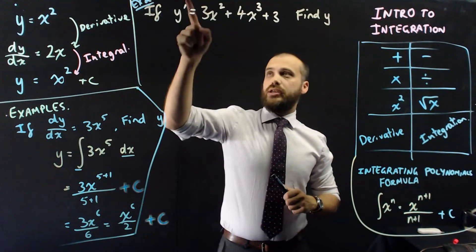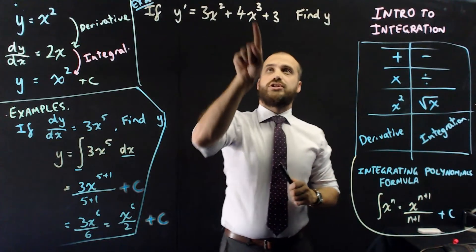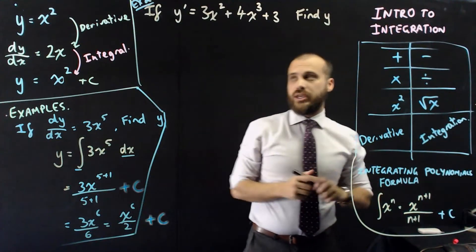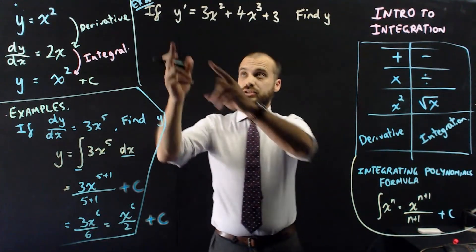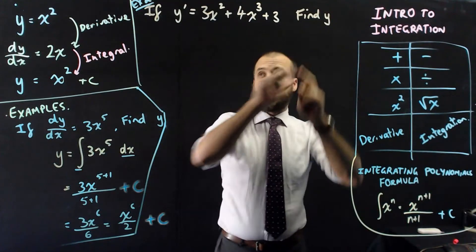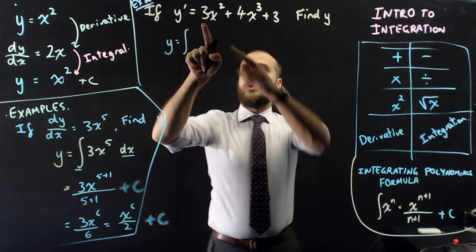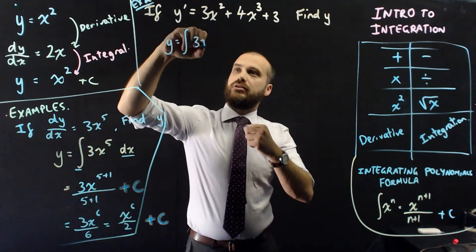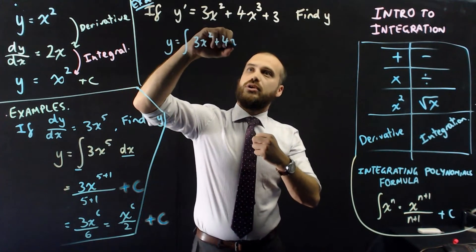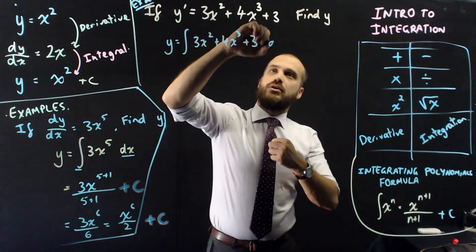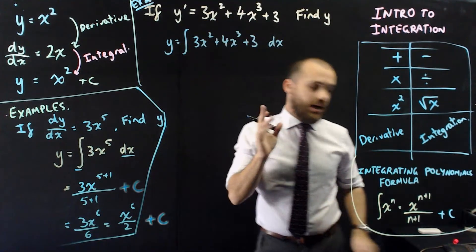Example 2. If y prime equals 3x squared plus 4x cubed plus 3, find y. This is another integration, because we know y prime, we want to find y. So, y is going to be equal to the integral of all of that, 3x squared plus 4x cubed plus 3, with respect to x.